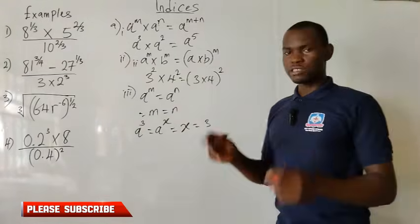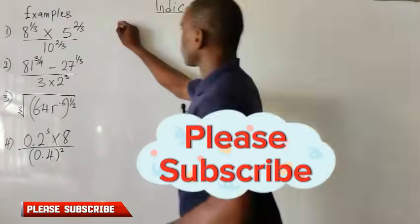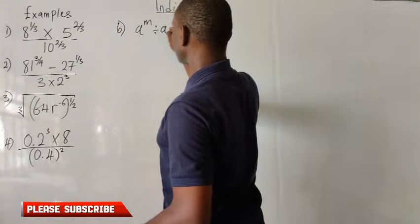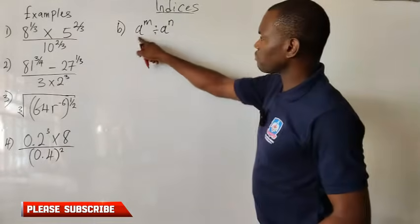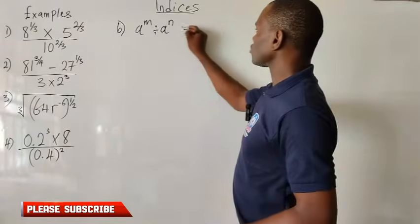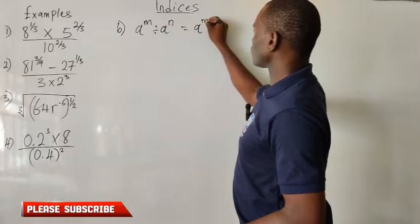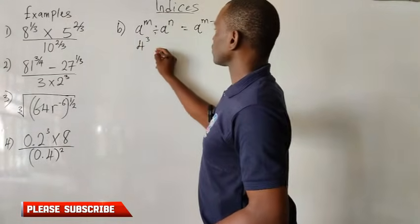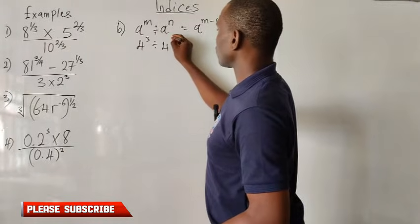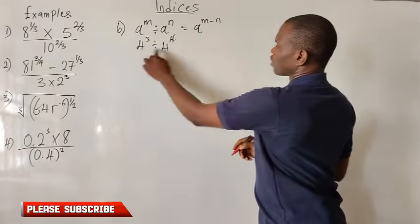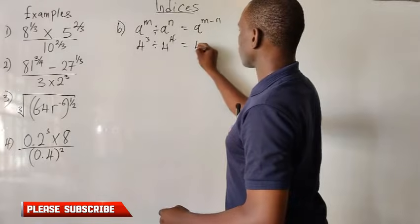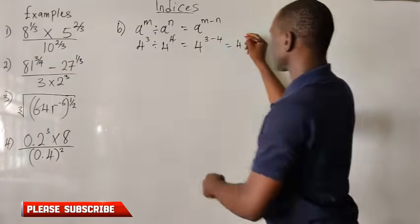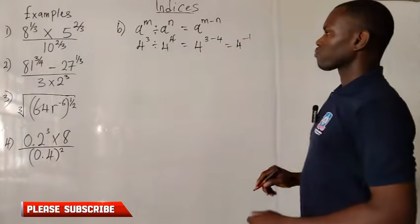Let's consider the second law of indices: division. A raised to the power of m divided by a raised to the power of n. Whenever the same bases are dividing themselves, all you need to do is take one base and subtract the powers, giving a raised to the power of m minus n. For instance, 4 raised to the power of 3 divided by 4 raised to the power of 4 — the bases are equal, so we subtract the powers: 3 minus 4, which gives us 4 raised to the power of minus 1.